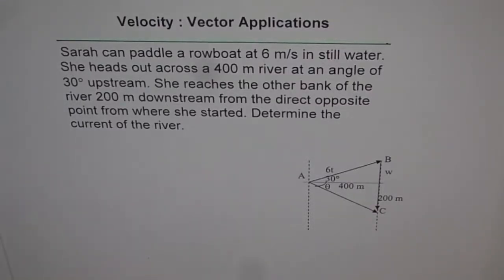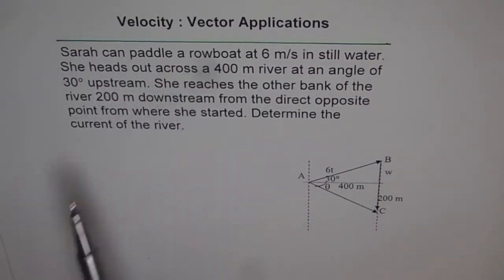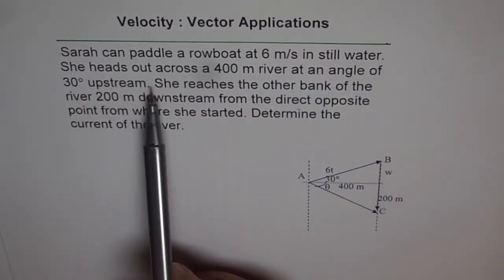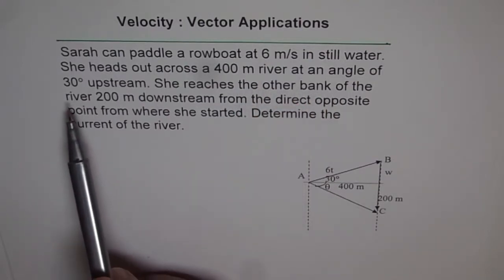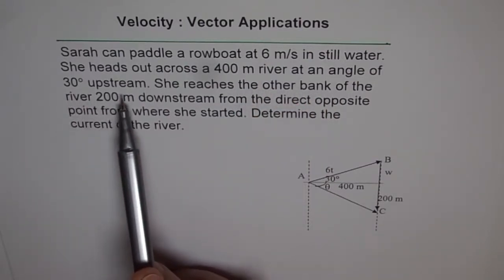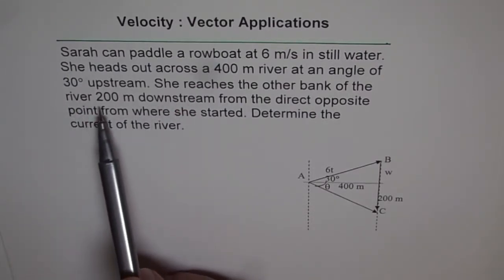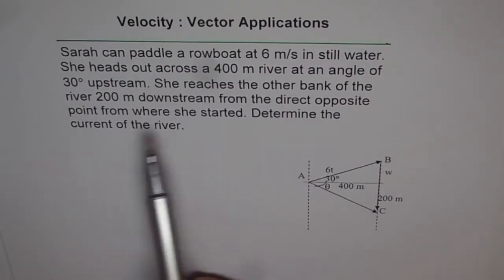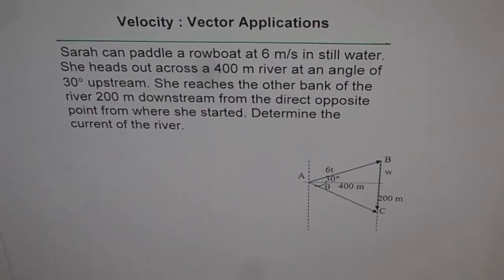Velocity Vector Applications. Here is another very interesting question. Sarah can paddle a rowboat at 6 meters per second in still water. She heads out across a 400 meter river at an angle of 30 degrees upstream. She reaches the other bank of the river 200 meters downstream from the direct opposite point from where she started. Determine the current of the river.